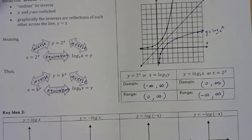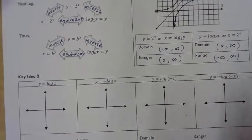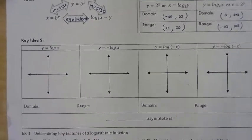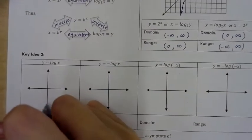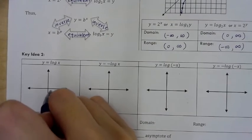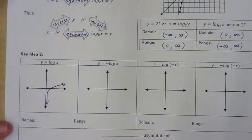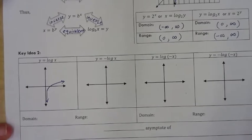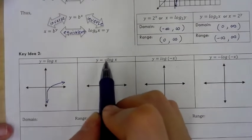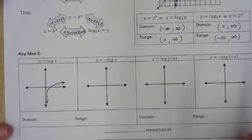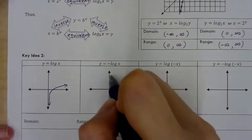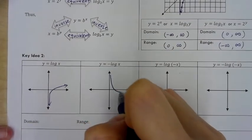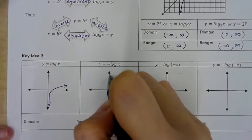There are some things you have to memorize in this course. You need to know the basic shape of the log function — it coasts along and then grows very slowly. If I put a negative in front of the log expression, it produces a reflection across the x-axis.